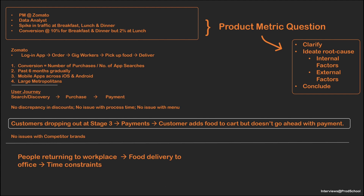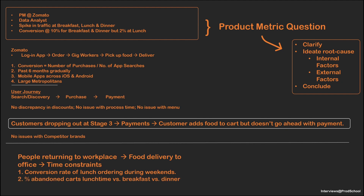To test my hypothesis, I'll look at two metrics: one, what is the conversion rate of lunch during weekends; and two, what is the percentage of abandoned carts at lunchtime versus breakfast versus dinner. If the hypothesis is confirmed — meaning the conversion rate at lunch on weekends is higher — then Zomato has two options: they can hire more delivery personnel to bring food in the shortest amount of time, or they might consider corporate tie-ups inside canteens to solve this issue.